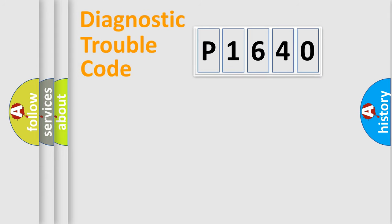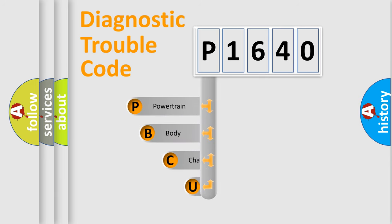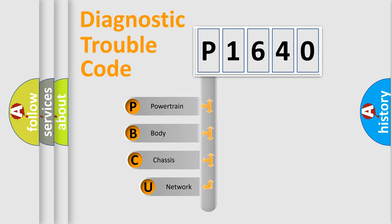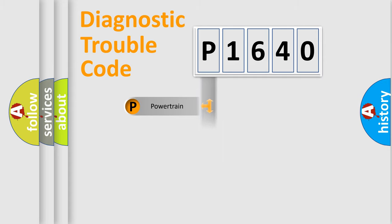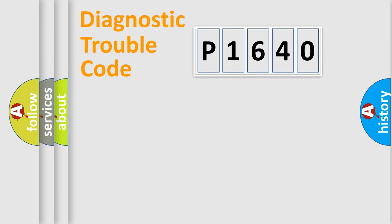Let's do this. First, let's look at the history of diagnostic fault code composition according to the OBD2 protocol, which is unified for all automakers since 2000. We divide the electric system of automobile into four basic units: Powertrain, Body, Chassis, and Network.